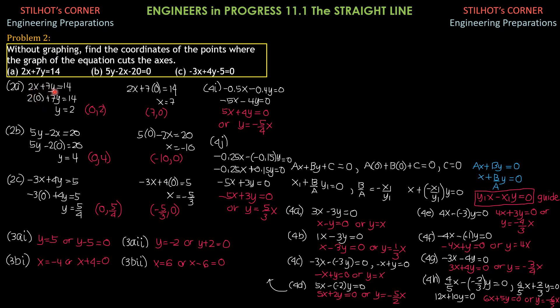So, 2x + 7y = 14. Set x = 0: 2(0) + 7y = 14, so y = 14/7 = 2. Therefore, the line cuts the y-axis at (0, 2). Likewise, when y = 0: 2x + 7(0) = 14, so x = 14/2 = 7. Therefore, the line cuts the x-axis at the point (7, 0).